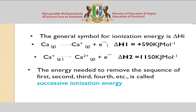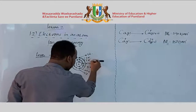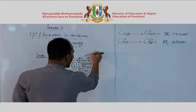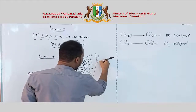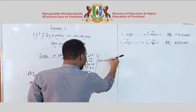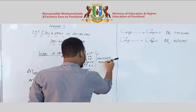Successive ionization energy refers to removing the second electron, third electron, and so on in sequence. Successive ionization energies are the series of ionization energies for each successive electron removed from an atom.